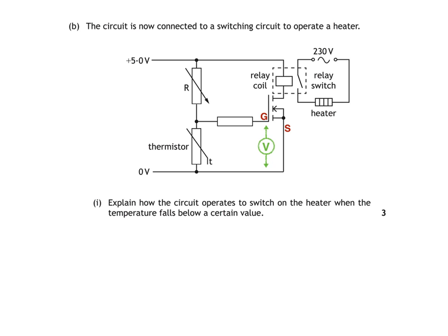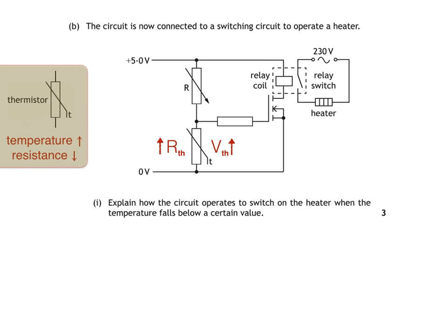If this voltage increases above a certain value, then the MOSFET conducts, and anything connected in series with it — here we have a relay — will operate. We need to get the voltage across the thermistor to increase above a certain value for the MOSFET to conduct. For this to happen, the resistance of the thermistor would have to increase. Remember that a thermistor's resistance decreases as temperature increases, so if we want its resistance to increase, then we'd have to cool it down.